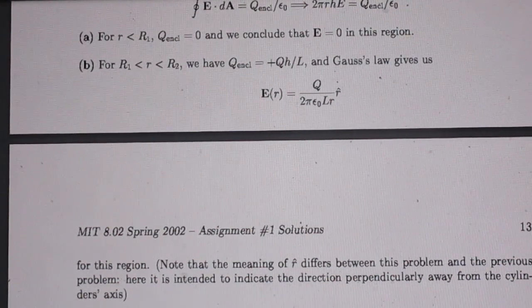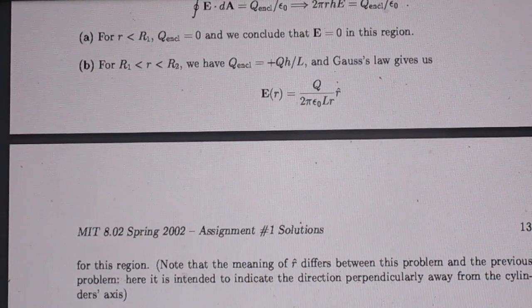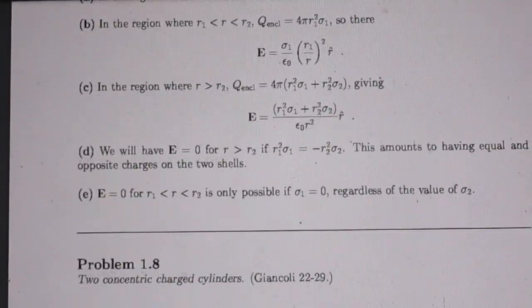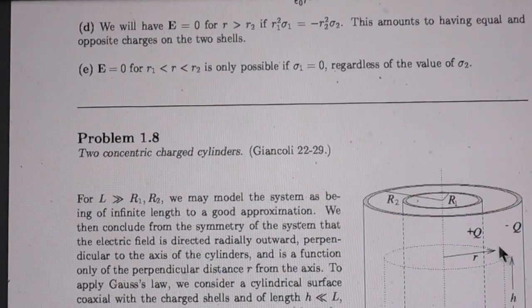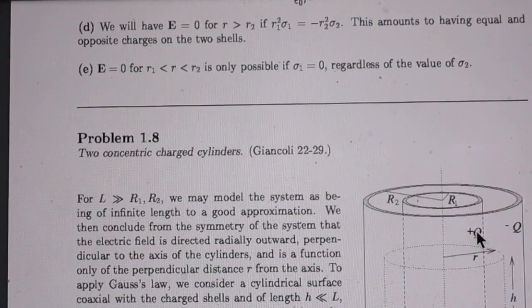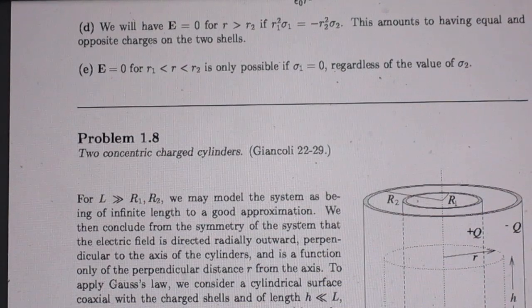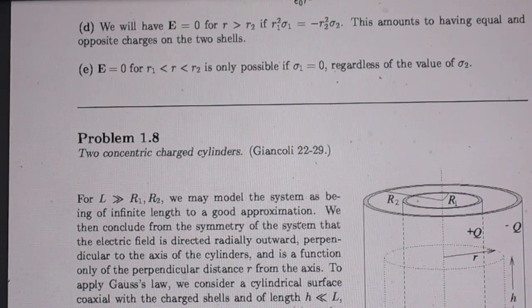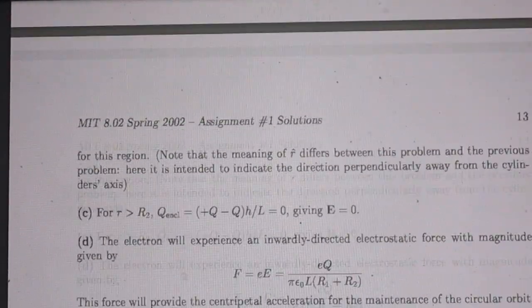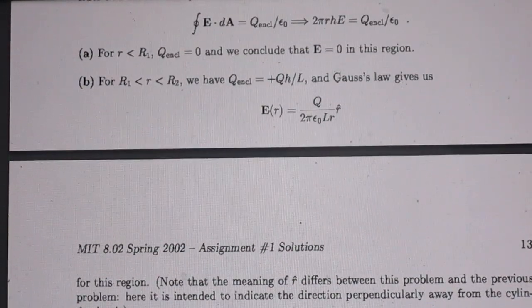Because now you only have a fraction of the total charge. Only a fraction of this total charge, which is this h divided by the total length L. There it is.